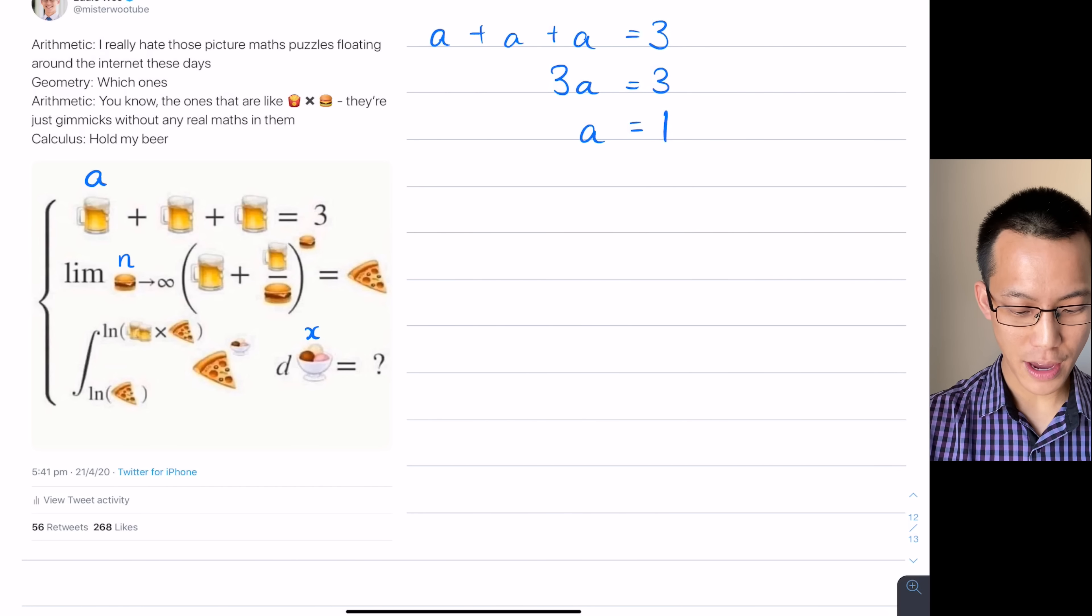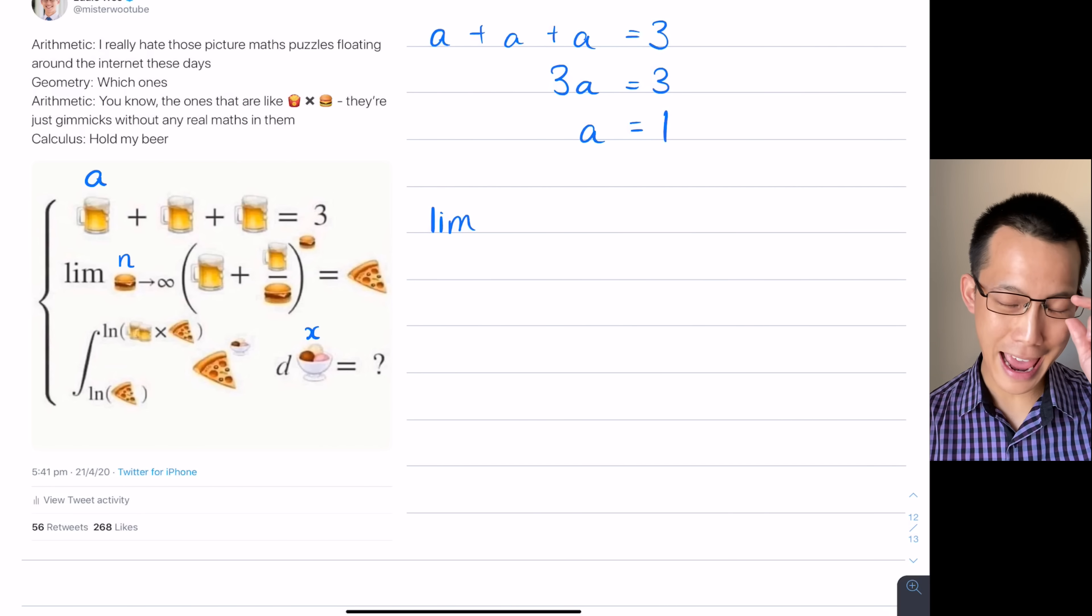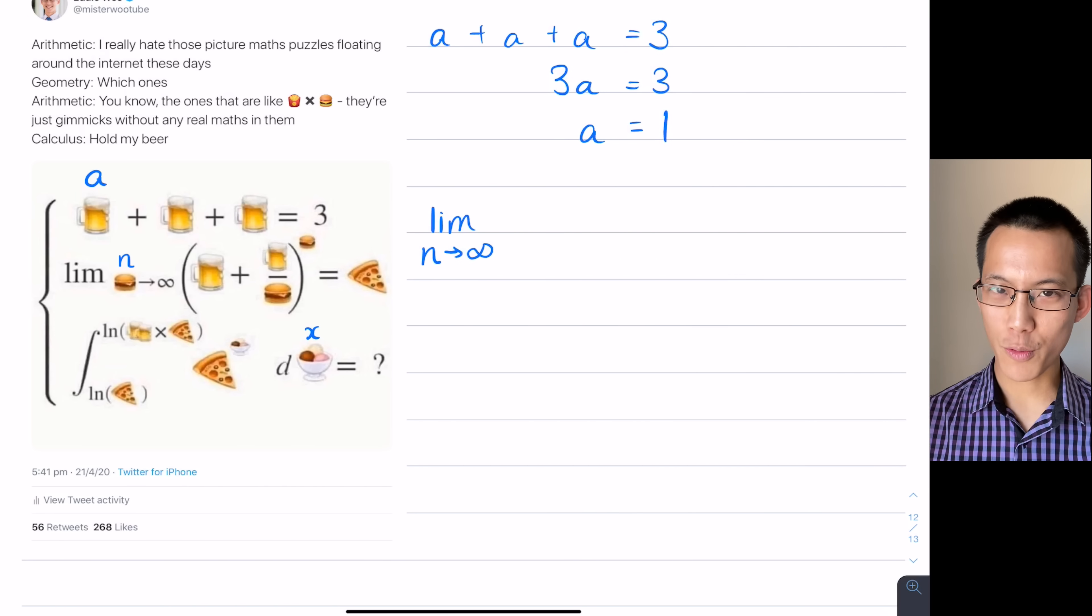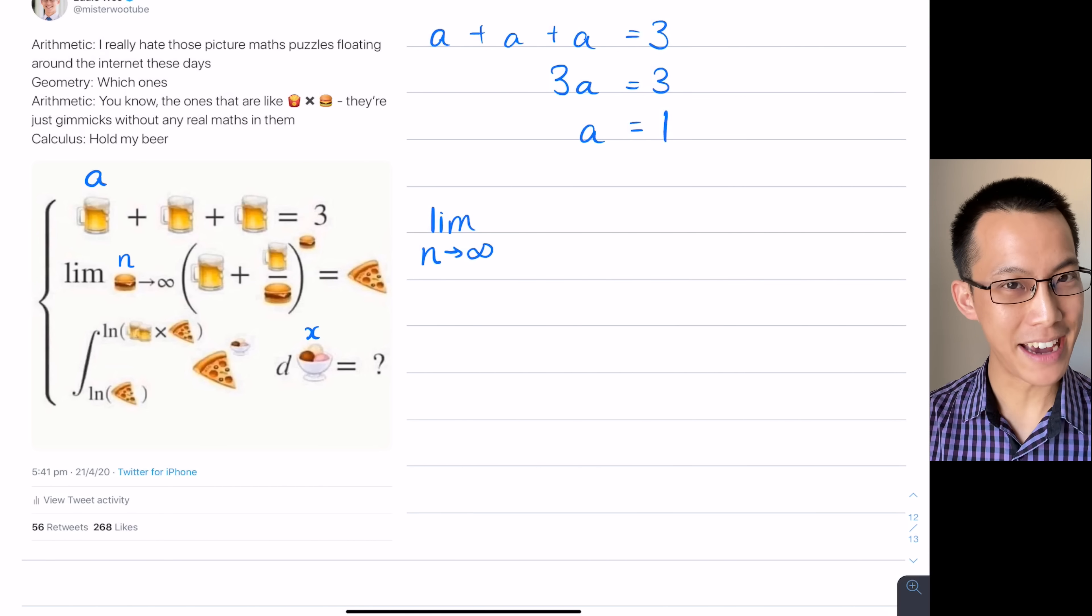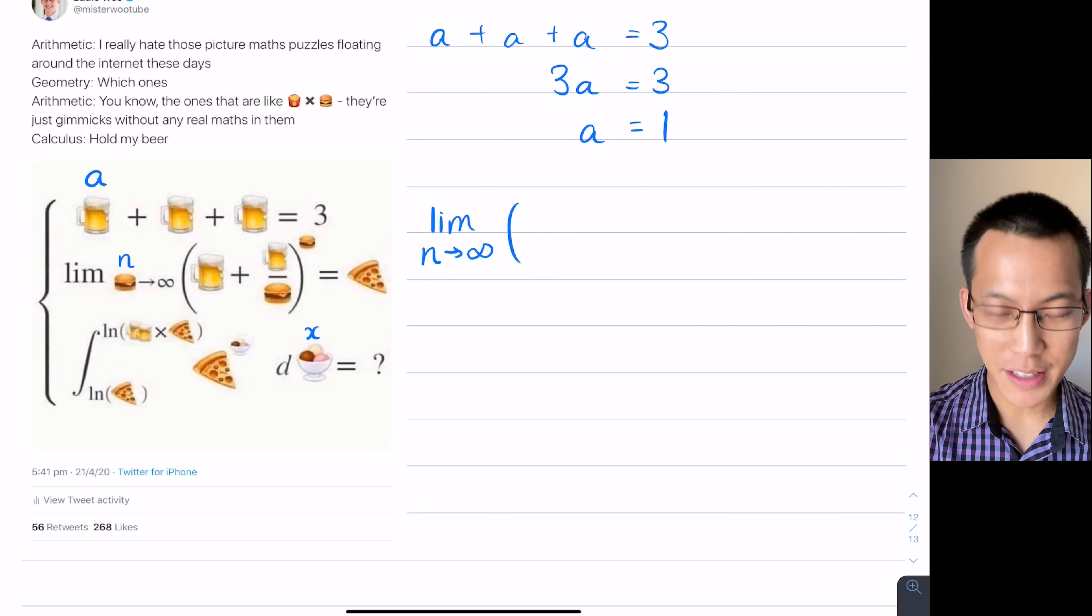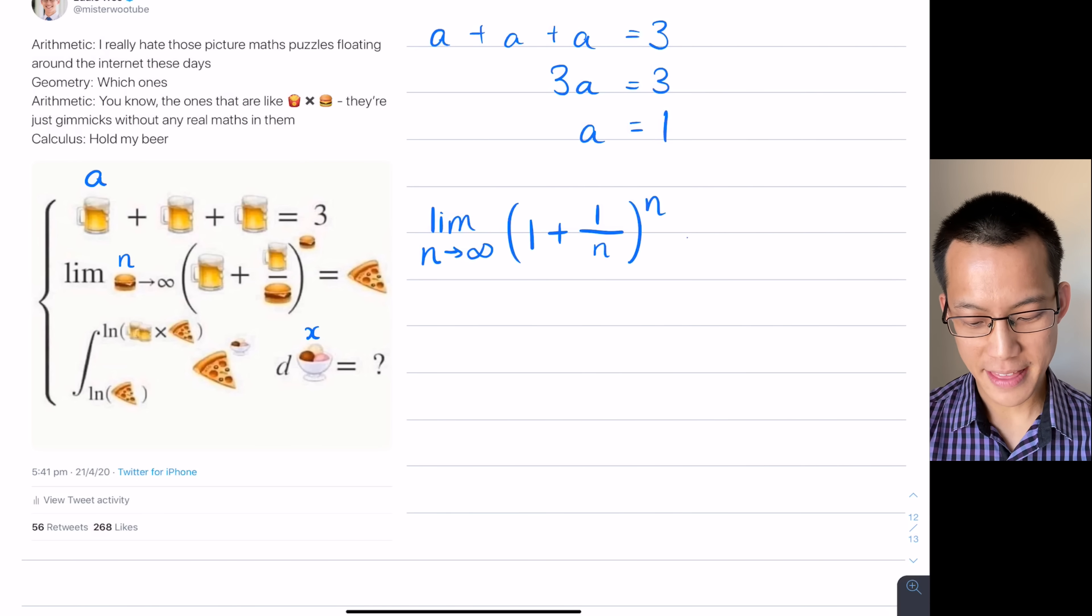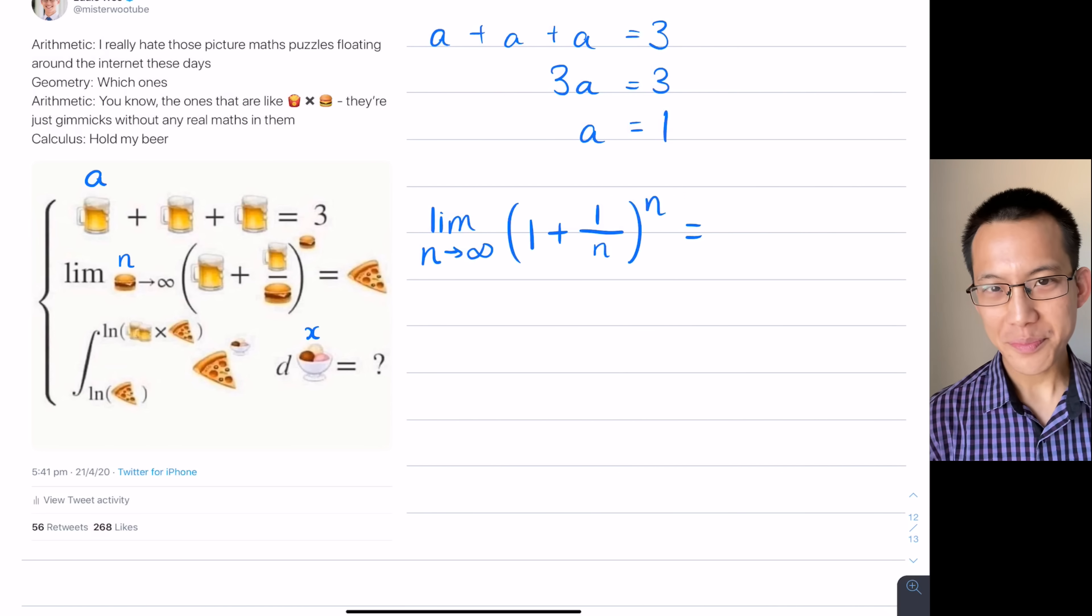Let's take that value for A, for the beer, and let's put that into the next line. So there's a limit here. I'm going to write that hamburger as N instead of a hamburger as N approaches infinity. And now I'm going to write, instead of beer or A, I'm going to use the number that I know A is equal to, which is one. So what I've got inside the brackets is one plus one over N, all to the power of N. And that apparently equals the pizza.